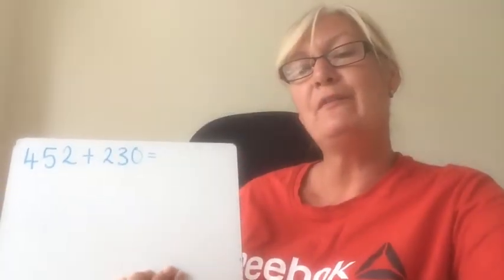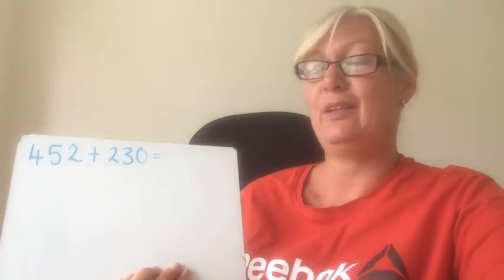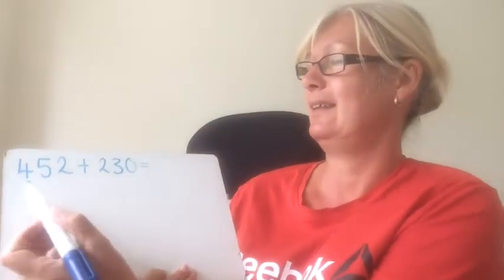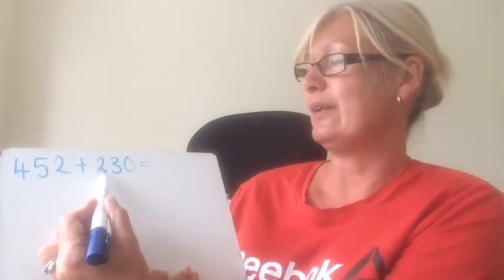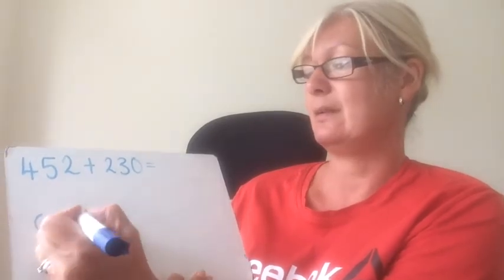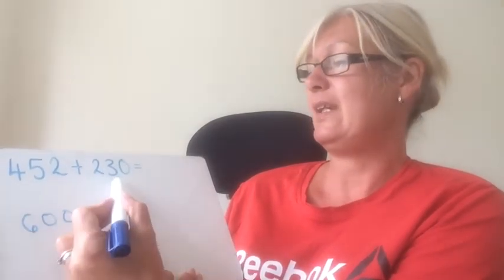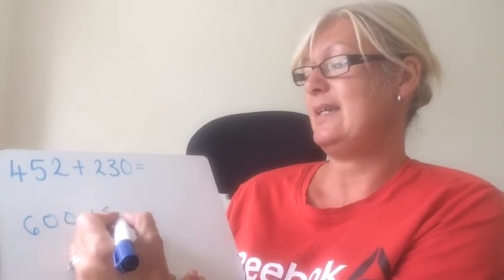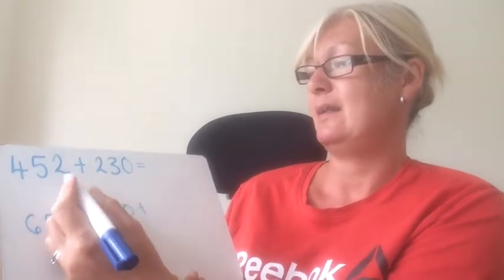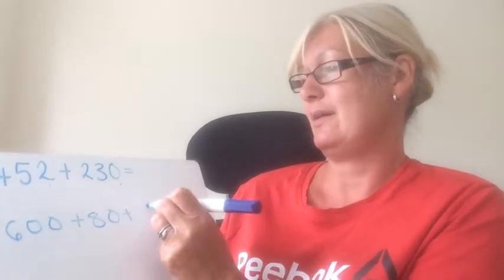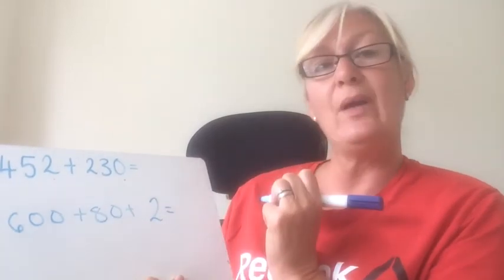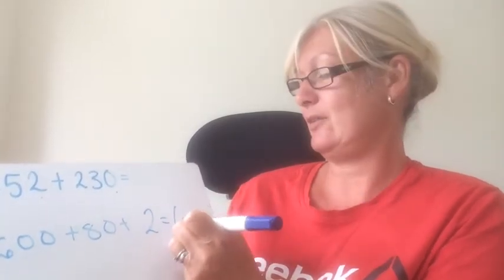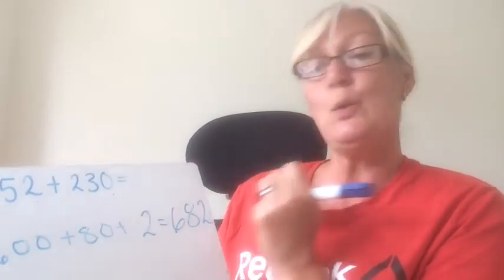Maybe you preferred the partitioning way. So you probably did it like this. 400 and 200 is 600. Fifty and thirty is eighty. Two and zero is two. Recombine. 682.